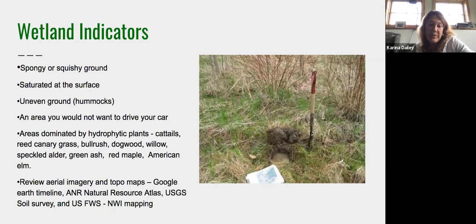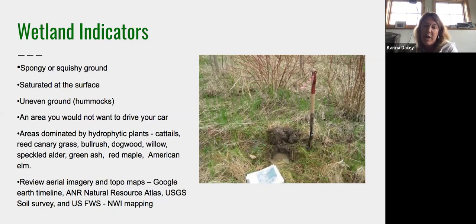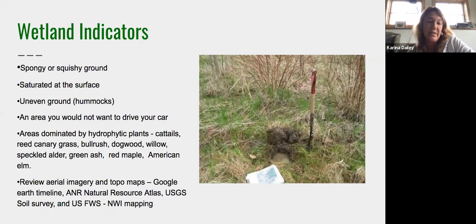The U.S. Fish and Wildlife Service has National Wetlands Inventory mapping, and the state of Vermont has the Vermont Significant Wetlands mapping, available on the ANR Natural Resource Atlas. It's often useful to turn on both the national wetlands layer and the state layer to see how those two mapping boundaries intersect and overlap.